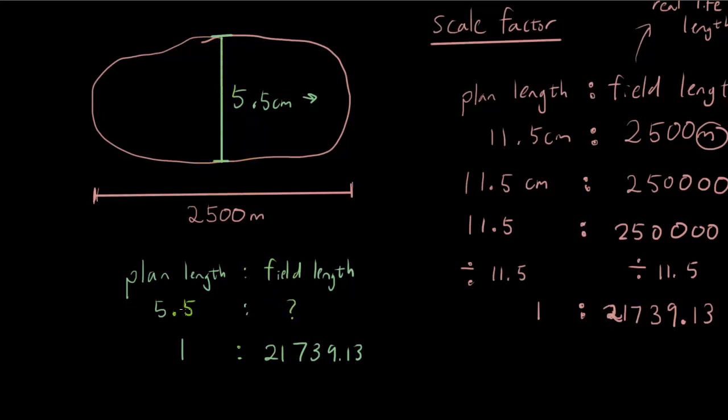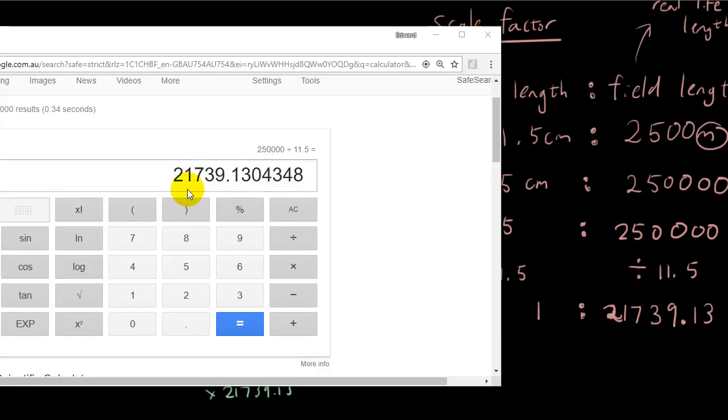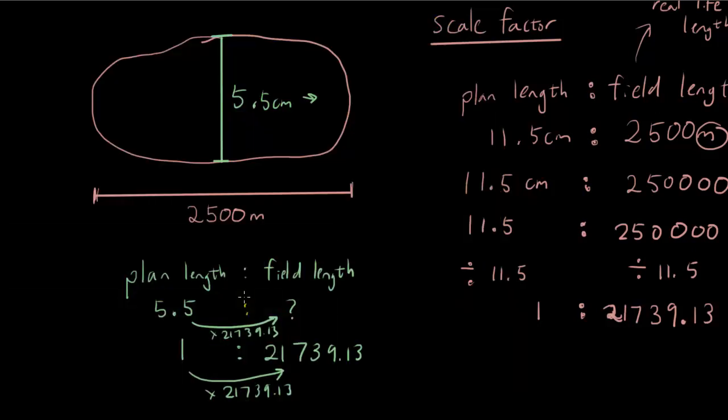Alright, because from 1 to this number, you would multiply by 21739. So you're going to do the same thing to 5.5, multiply by 21739. So let's put that into the calculator. So we have 21739.13 times 5.5 and I have 119565.